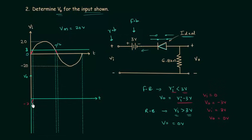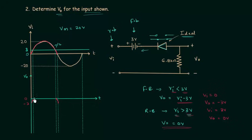Plotting the output for the first half cycle: when VI is less than 3V, VO = VI − 3V. When VI = 0, VO = −3V; when VI = 3V, VO = 0V. So the waveform goes from −3V up to 0V for that interval. After this, when VI is greater than 3V, the output voltage is equal to 0V, so the output remains at 0 during that time interval.